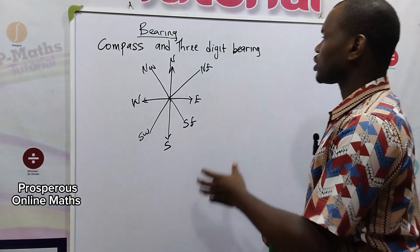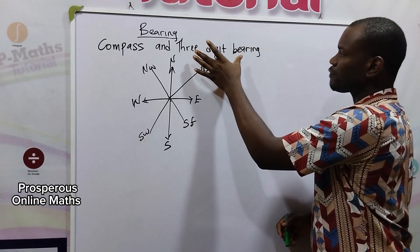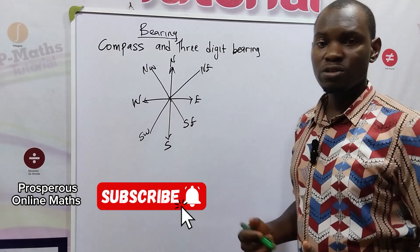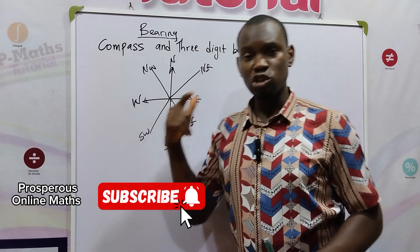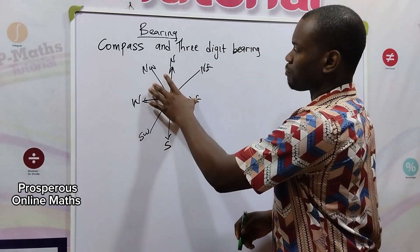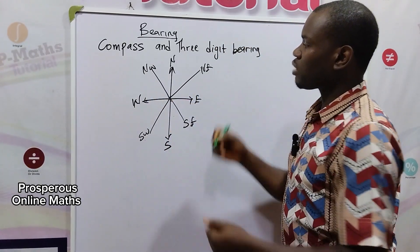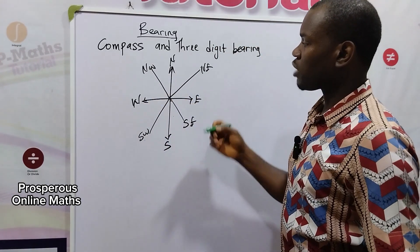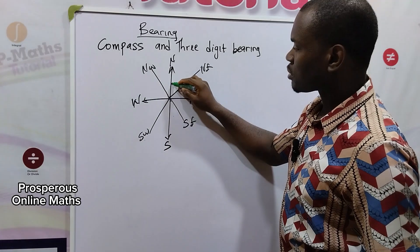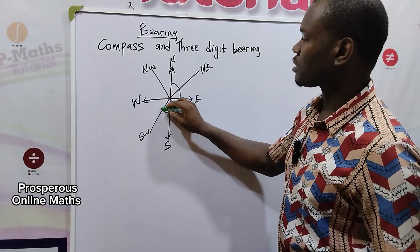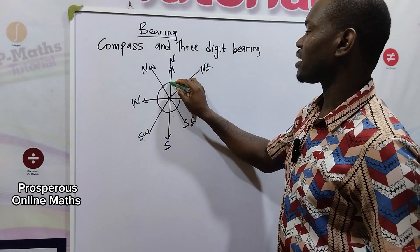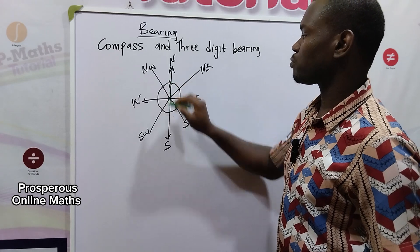Then on the other hand, the three figure bearing are angles measured from the north pole in clockwise direction. So when you have your compass and you are measuring all your angles from the north pole down through the first, second, third, and fourth quadrant till you arrive back at the north pole, we consider it as a three figure bearing.